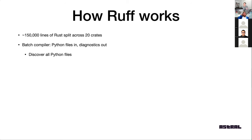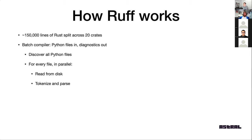We first discover all the Python files in your project. That sounds simple but is actually kind of complicated because we support hierarchical configuration — you could lint a monorepo with different packages all having different configurations. And then we have a very simple model: for every single file in parallel, we lint it. That means read the file from disk, tokenize it, and parse it — break it down into tokens like keywords and variable names — and parse it to create the abstract syntax tree. We get a representation of function definitions, imports, and function calls.